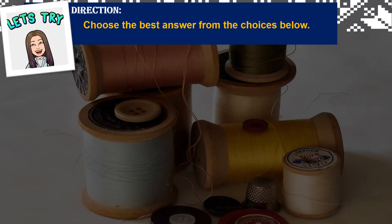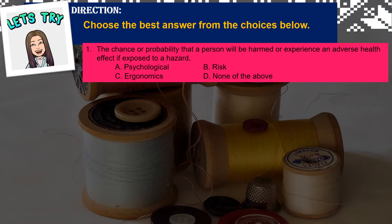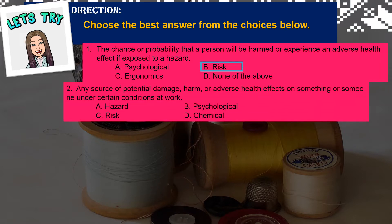Before we proceed to our new lesson, let's have a pre-test first. Direction: choose the best answer from the choices below. Number 1: the chance or probability that a person will be harmed or experience an adverse health effect if exposed to a hazard is: a) psychological, b) risk, c) ergonomics, d) none of the above. The correct answer is letter B — risk.